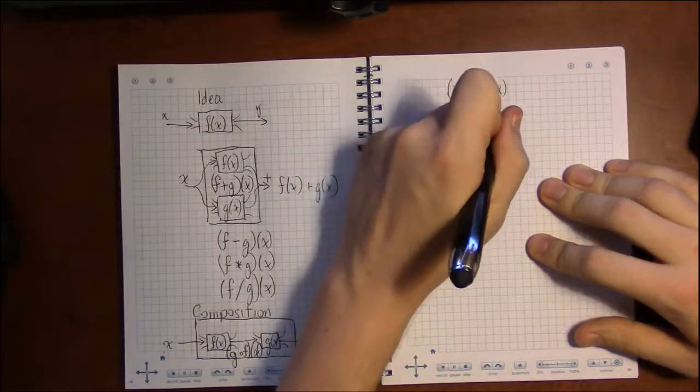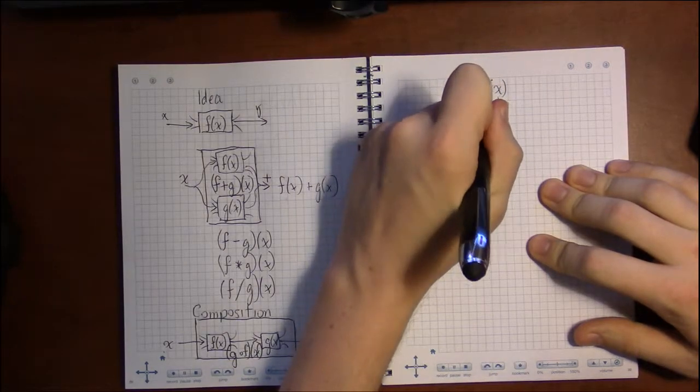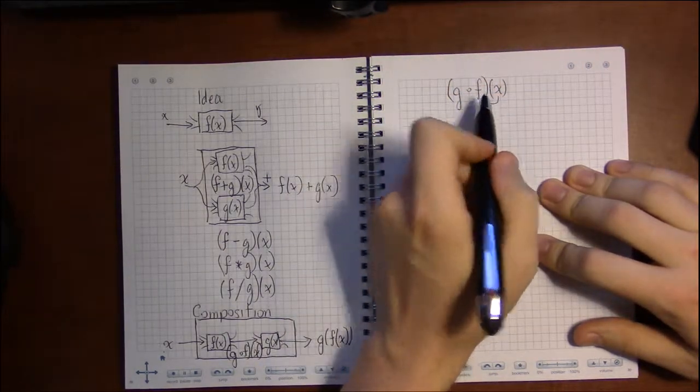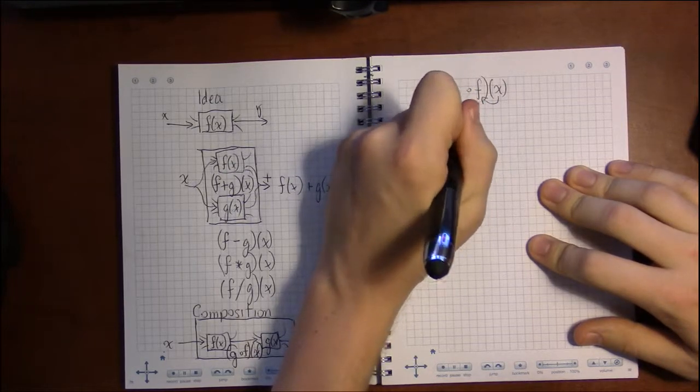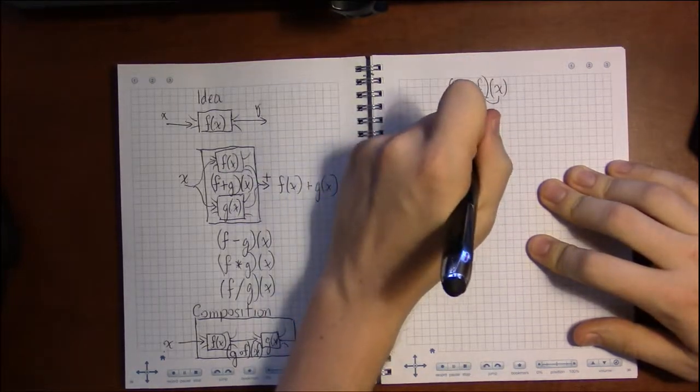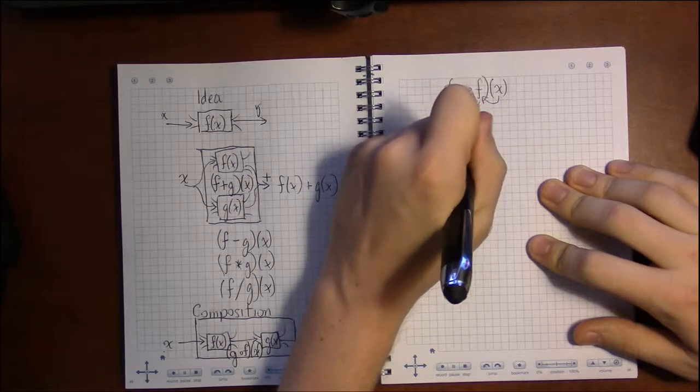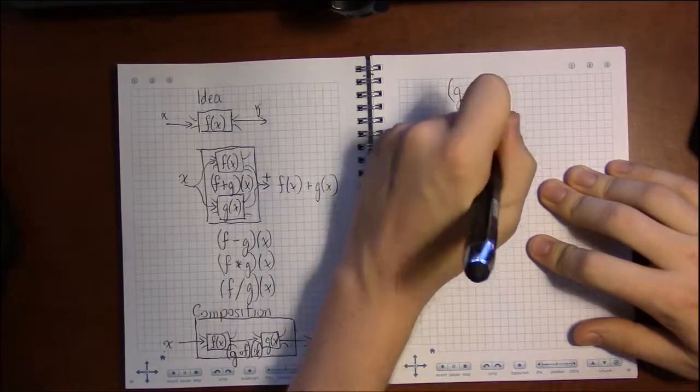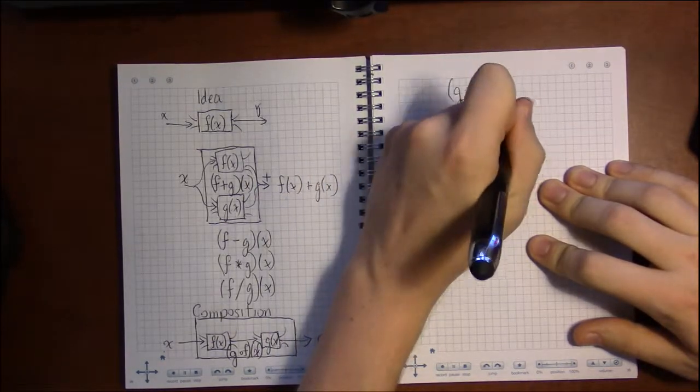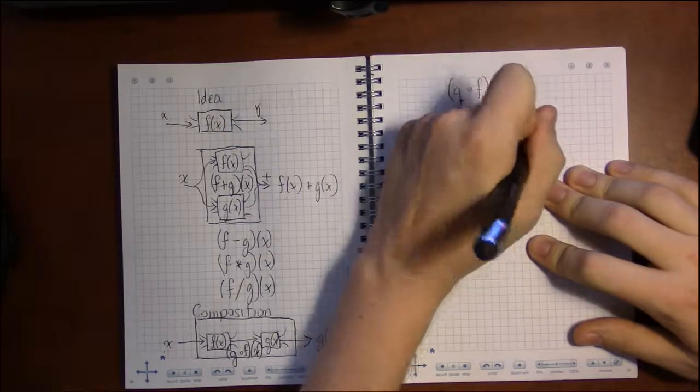It's kind of like you want to read this right to left. x is going to go into f. Then that is going to go into g.